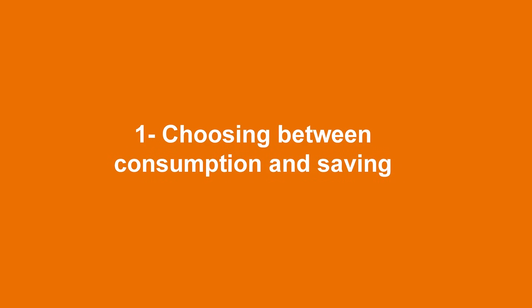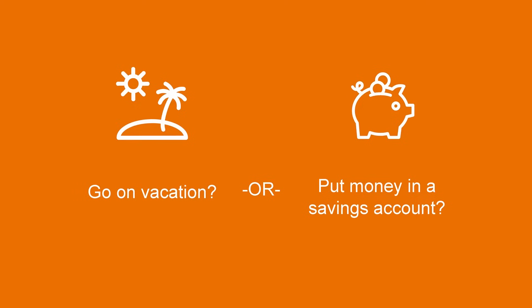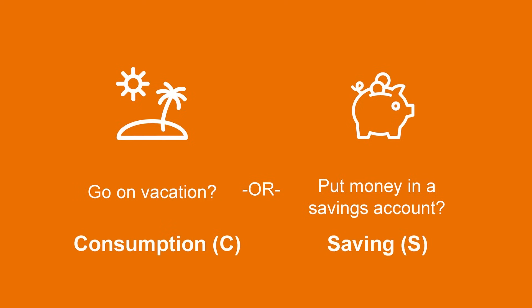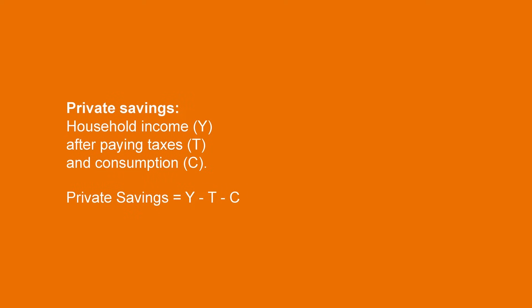Let's start with choosing between consumption and savings. Imagine that you worked really hard last year and you got a good annual bonus. What are you going to do with this money? Well, you can go on a vacation and have a good time now, or you can put the money in your savings account, which, for example, will take you closer to buying a house in a few years. This is how households choose between consumption and savings. Private saving is equal to the household income after paying taxes to the government and after all consumption spending, including that trip that you could take.